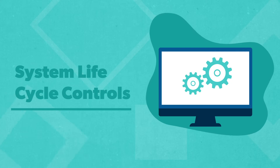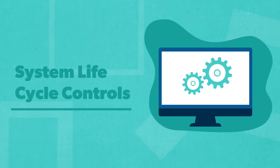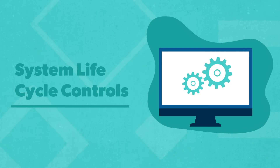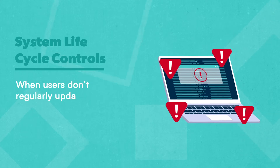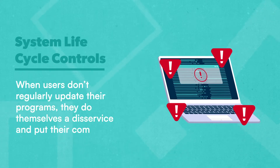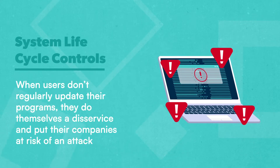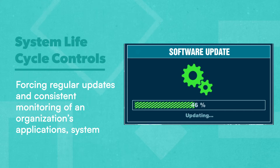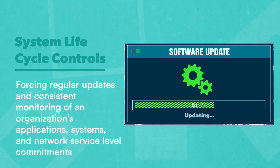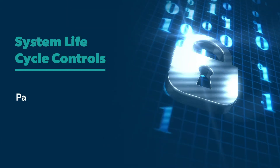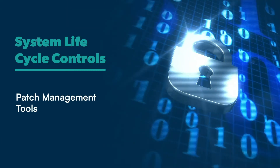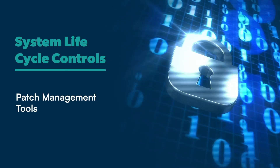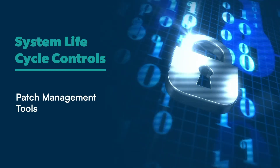Next, we have System Lifecycle Controls, used to manage application, system, or network releases and updates. When users don't regularly update their programs, they put their companies at risk of an attack. That's why many ITGCs focus on forcing regular updates and consistent monitoring of an organization's applications, systems, and network service level commitments. Many companies also implement patch management tools to automatically deploy patches to the operating systems, browsers, and applications that are behind schedule.